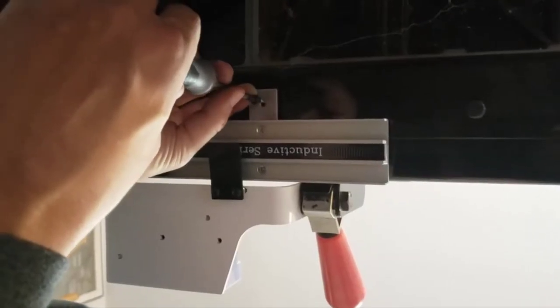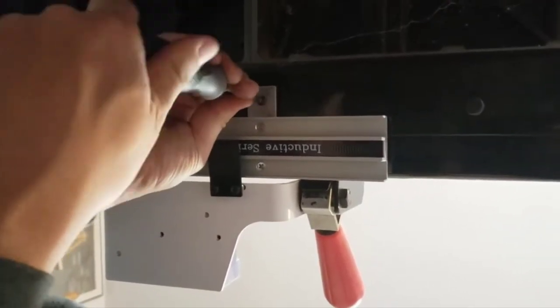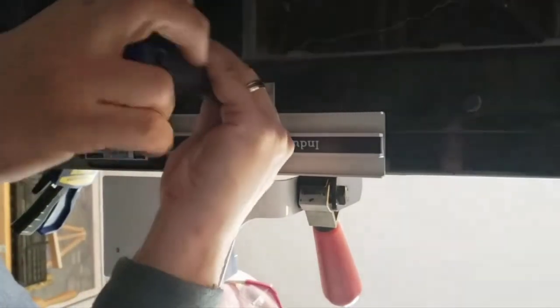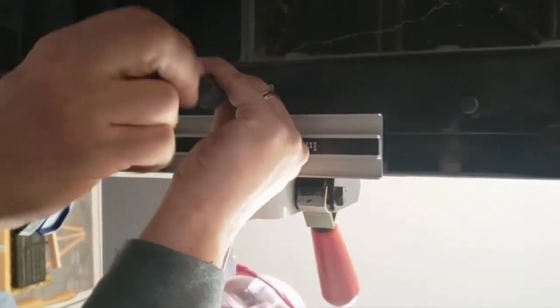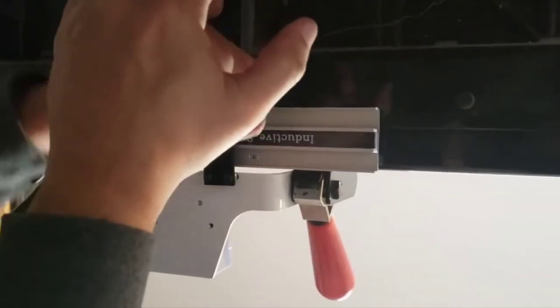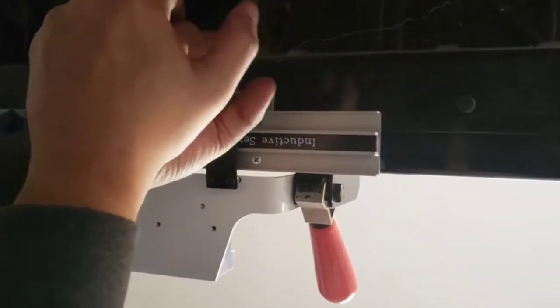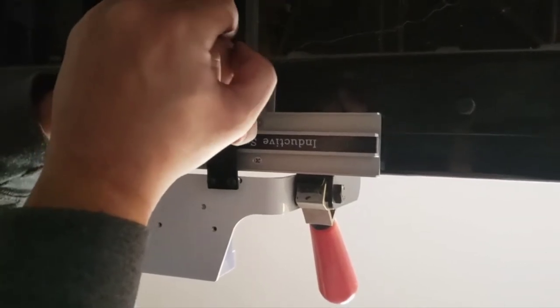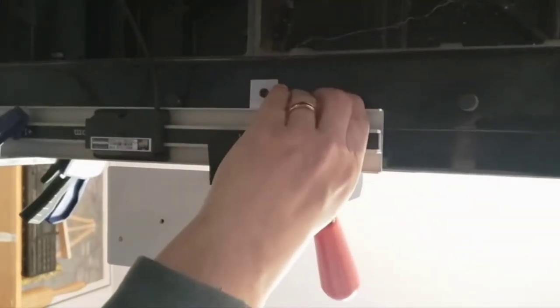Step 26: Attach the scale assembly to the angle iron using the supplied 8-32 by 3/8 inch Phillips pan head screws. It's recommended to use thread lock for these screws. Please note that you will only need to do the screws at each end of the fence. It's optional to do all three if it's wanted, but it is not required.